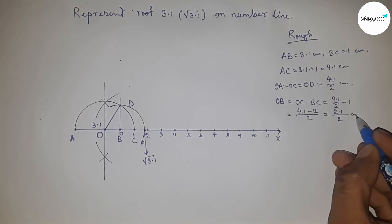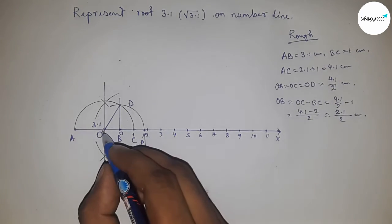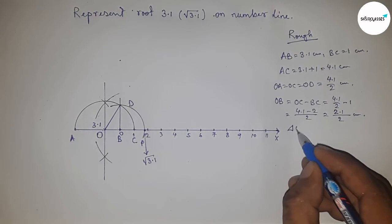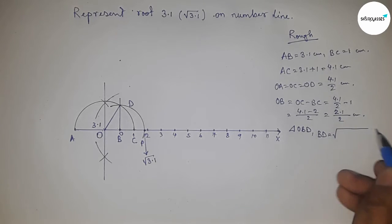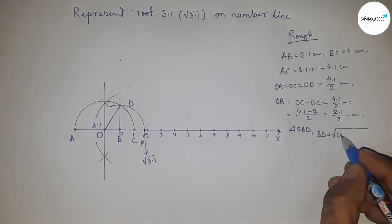From right angle triangle OBD, we can write by Pythagoras theorem: BD equals the square root of OD squared minus OB squared.